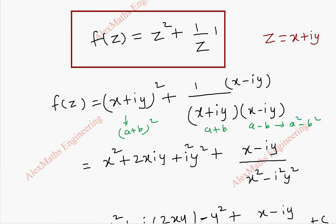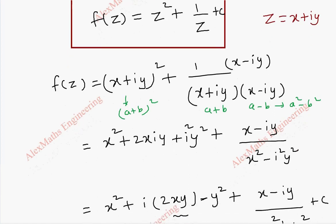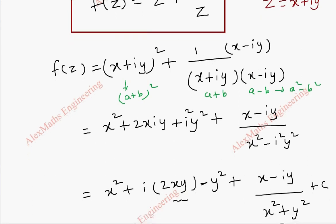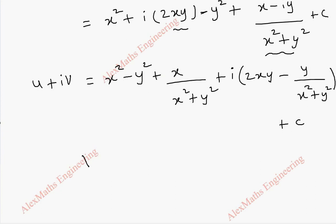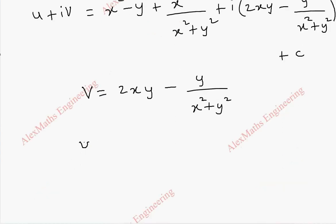So, comparing the imaginary part, the stream function is ψ = 2xy - y/(x² + y²), plus c. Thus we have found the stream function.